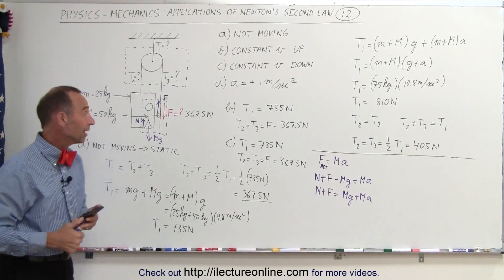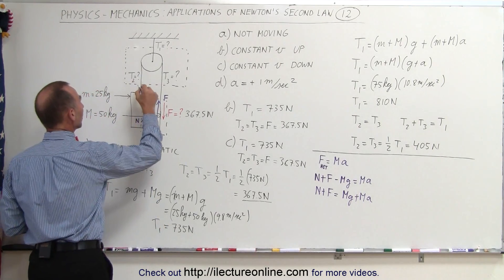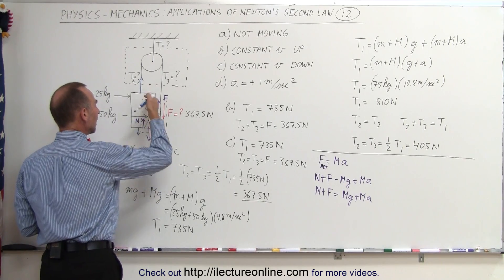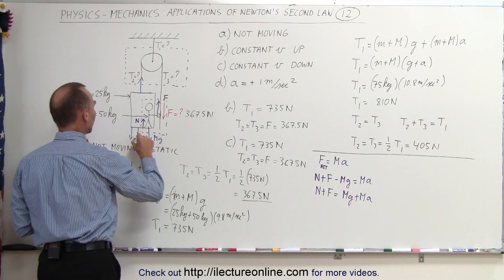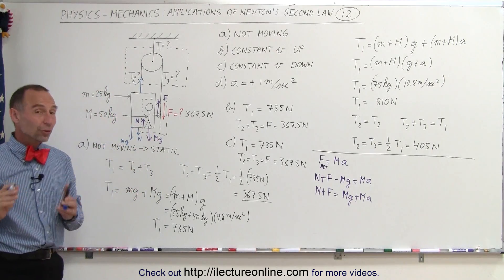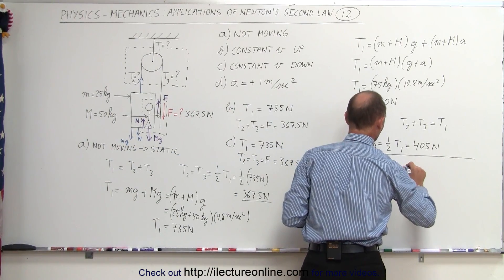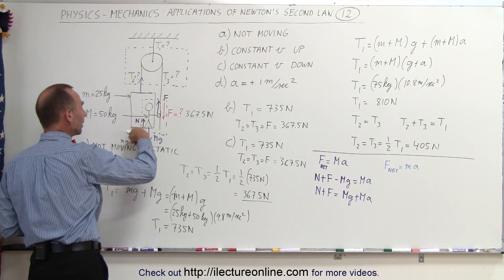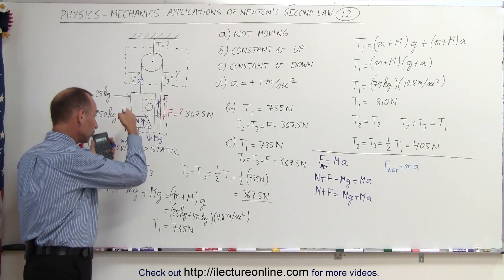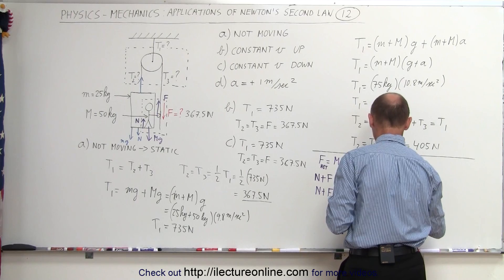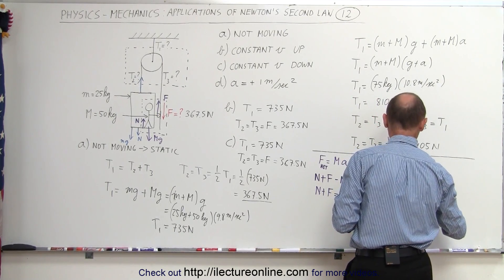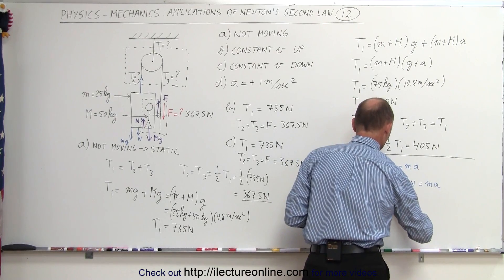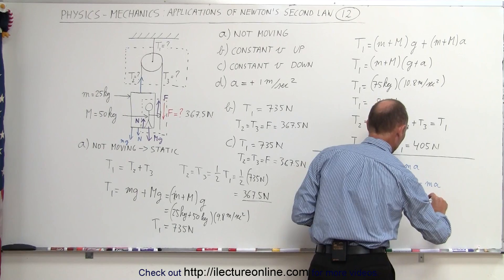For the box's free body diagram: T2 pulls up, while the normal force N (person pushing down on box) and the box's weight m×g pull down. Applying Newton's Second Law: T2 − mg − N = ma, so T2 − N = mg + ma.